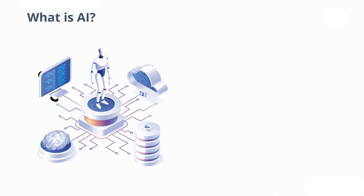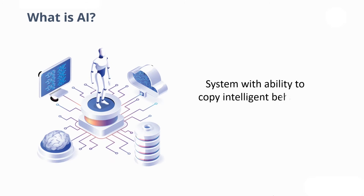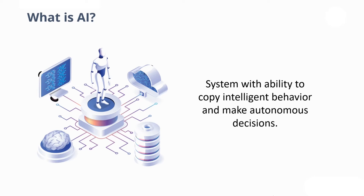So what really is AI? In the simplest terms, AI is a system with the ability to copy intelligent behavior and make autonomous decisions. It's a technology where computers are capable of performing tasks that typically require human intelligence. These tasks would include analysis, problem solving, reasoning, learning, and much more.